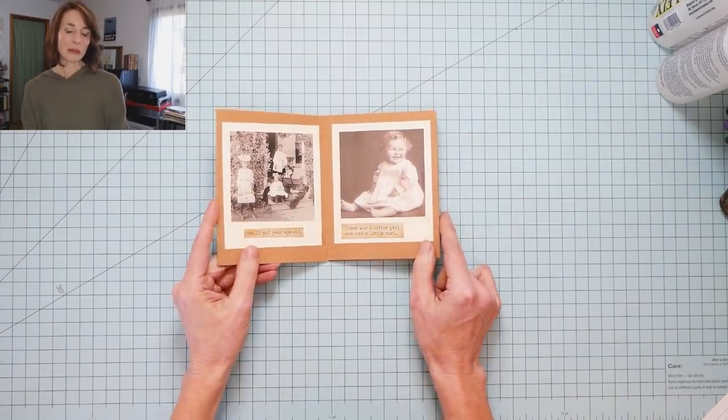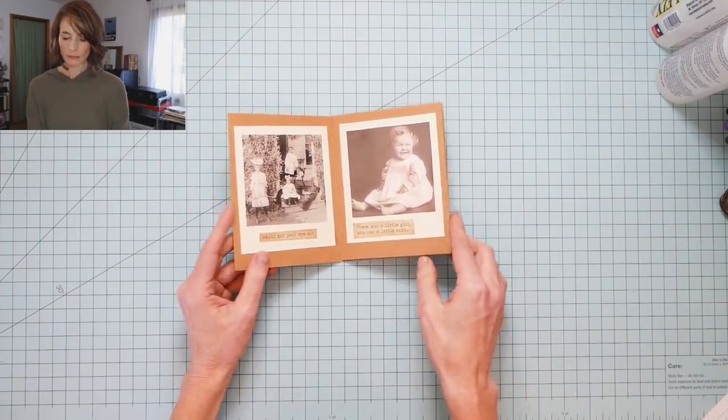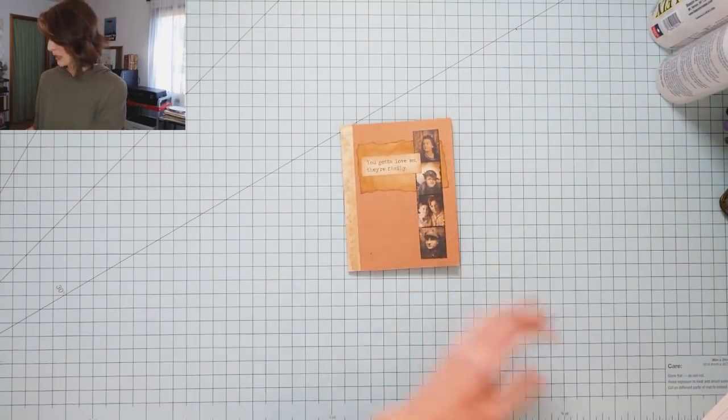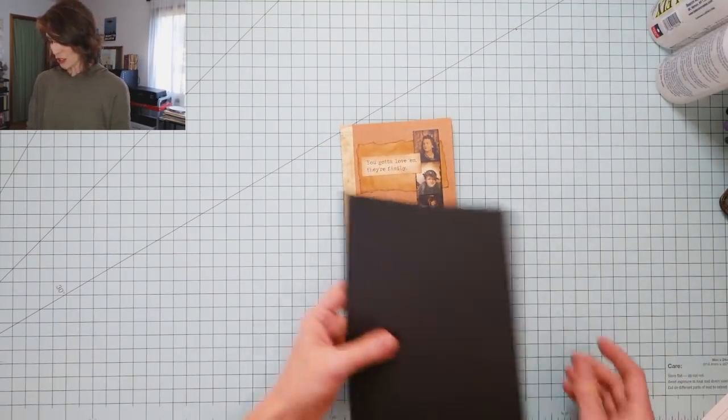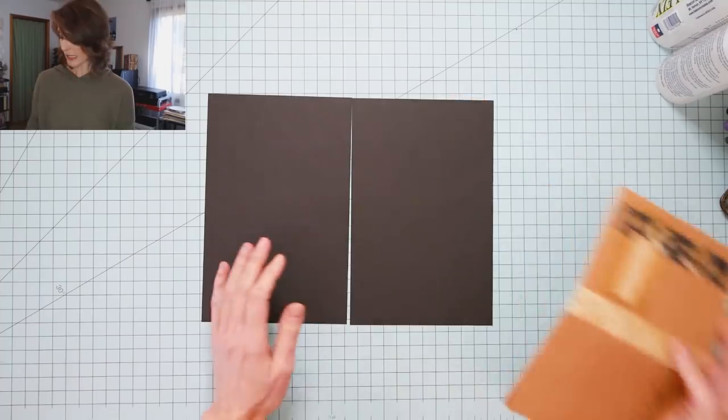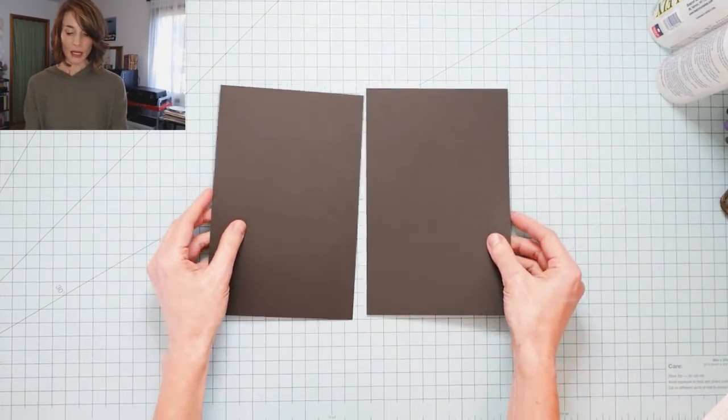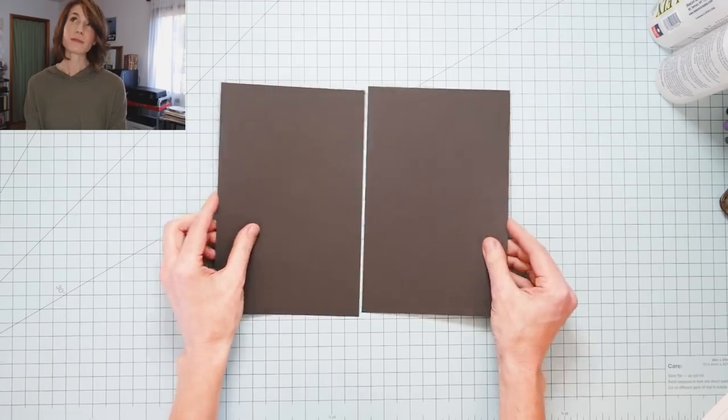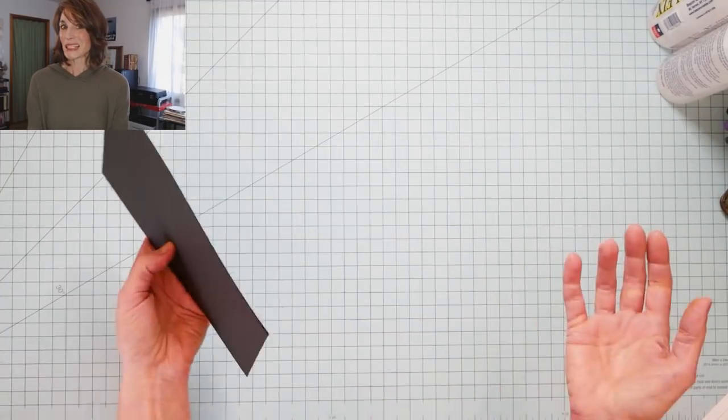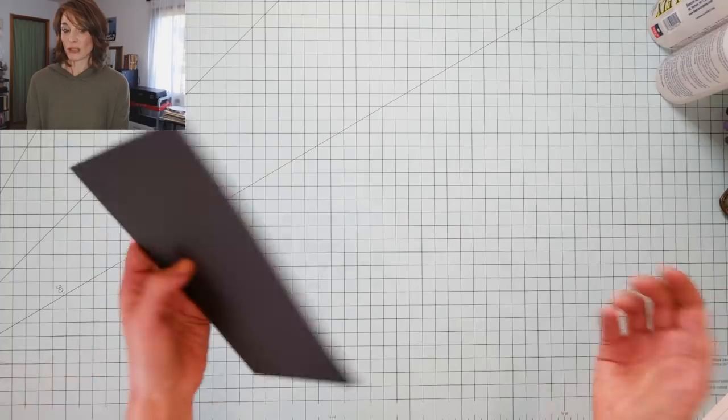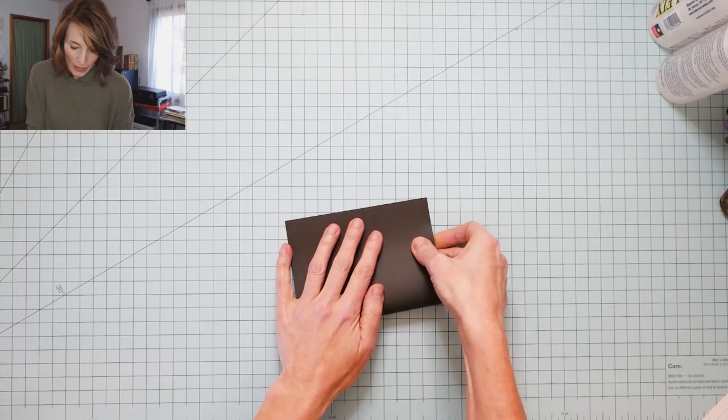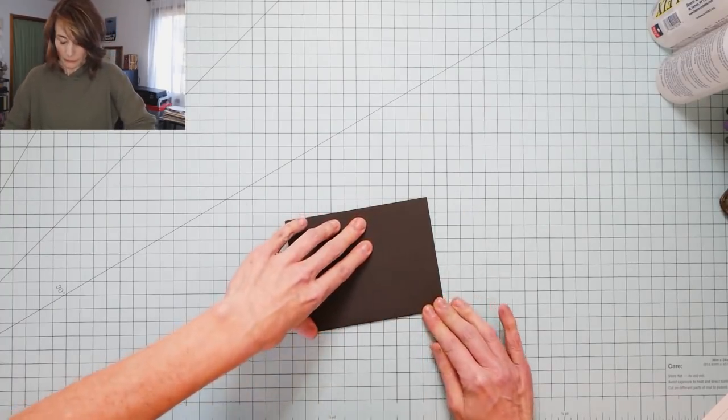So do you remember this little brag book that we made with the little Polaroid kind of pages and we put our family in here? Well, one thing that I thought that we could do, I took some, this is just black card stock. This was craft card stock that I had cut in half. So this is just black card stock. And this was eight and a half by 11 sheet that I just cut in half. I'm going to stack those on top of each other. And you can make these as many pages as you'd like. And now I'm going to fold that in half, just like that.